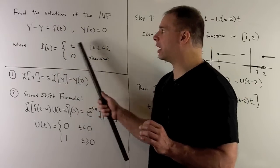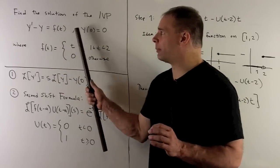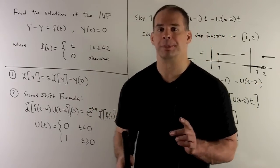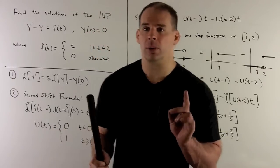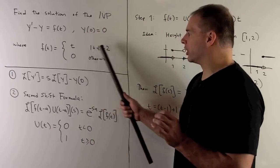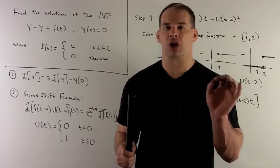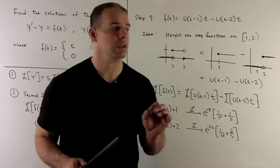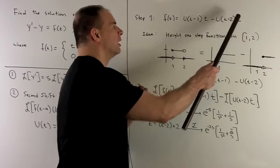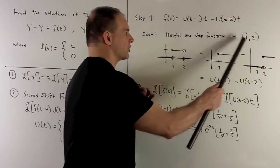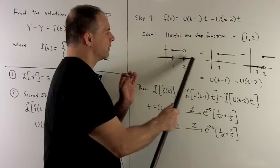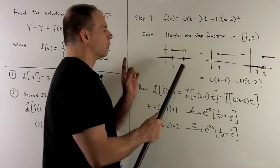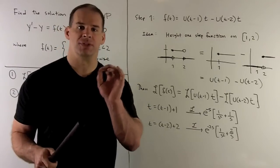To solve the problem, we take the Laplace transform of both sides. First, we find the Laplace transform of f of t. Since we're looking at our function on an interval, we want to rewrite it as our function times the difference of two shifted unit step functions — focusing on the height-one step function on this interval.